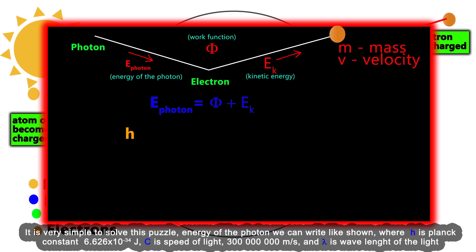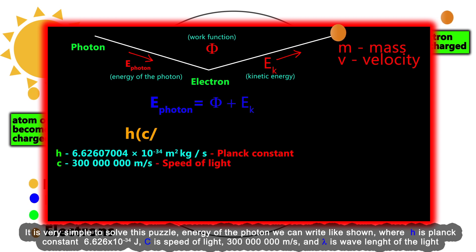It is very simple to solve this puzzle. Energy of the photon we can write as shown, where h is Planck's constant, 6.626 times 10 to the minus 34 joules, c is the speed of light, 300 million meters per second, and lambda is the wavelength of the light.